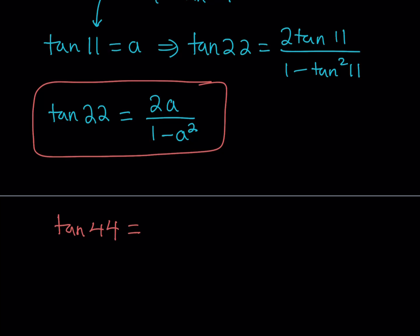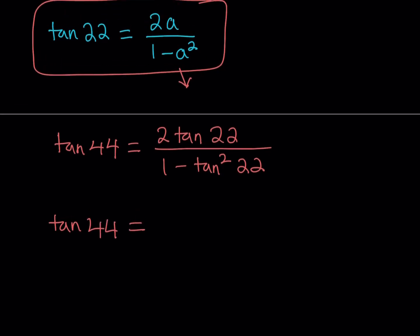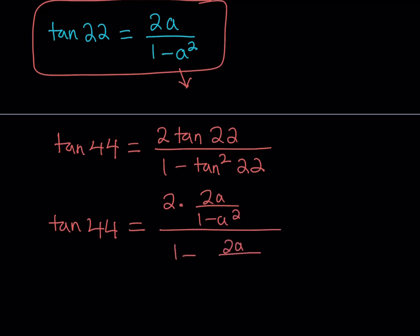So I need to write the same double angle formula for tangent 44: 2 times tangent 22 divided by 1 minus tangent squared 22. We know tangent 22 equals that expression, so I can replace tangent 22 with 2A over 1 minus A squared. So it's going to be 2 times (2A over 1 minus A squared) divided by 1 minus the quantity (2A over 1 minus A squared) squared. In other words, we're finding tangent 44 in terms of tangent 11 — kind of like a quadruple angle formula.